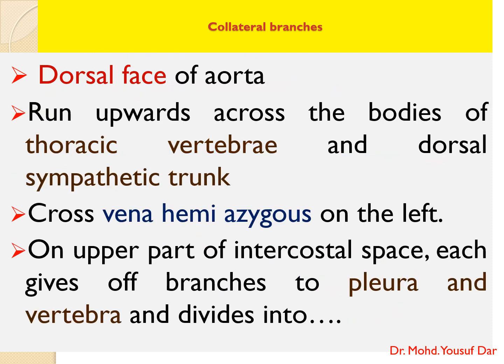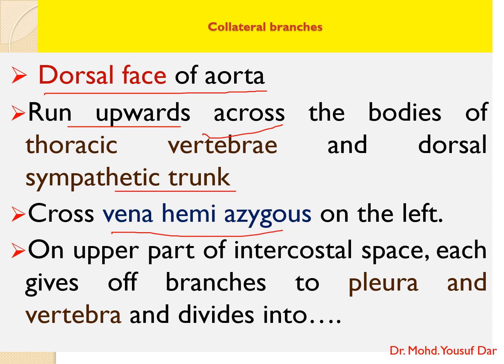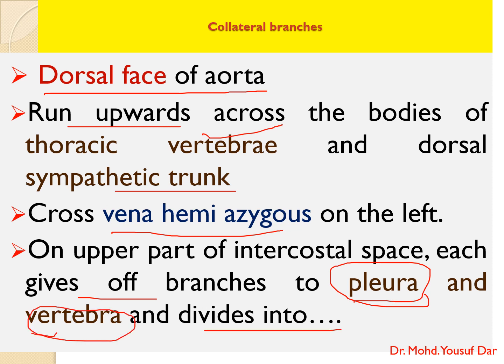The intercostal arteries arise from the dorsal face of the aorta in pairs at regular intervals. They run upwards across the body of the thoracic vertebrae and the dorsal sympathetic trunk, crossing the vena hemiazygos on the left side. On reaching the upper part of the intercostal space, each intercostal artery gives branches that supply the pleura and the vertebra.